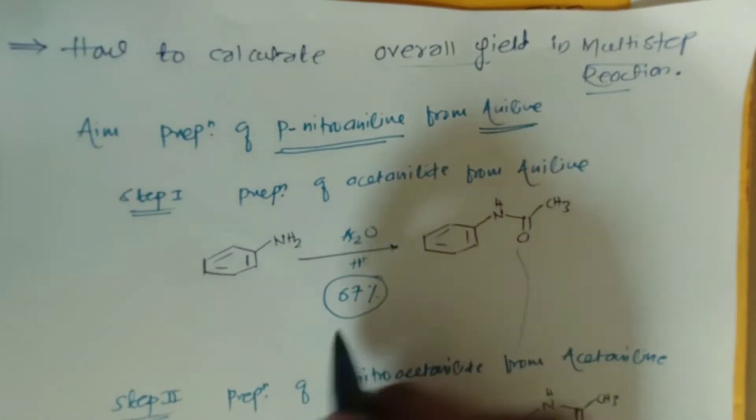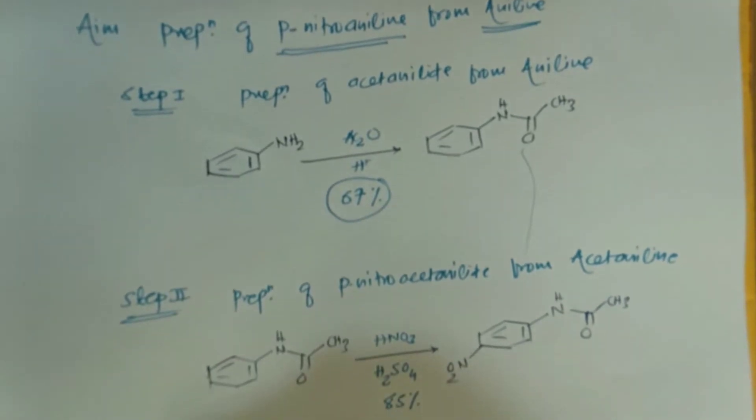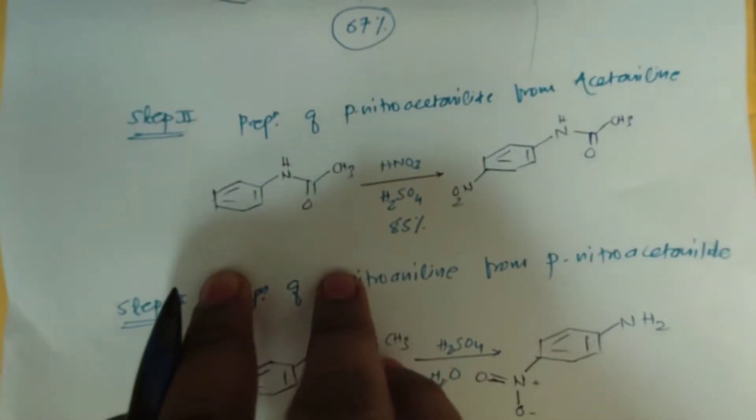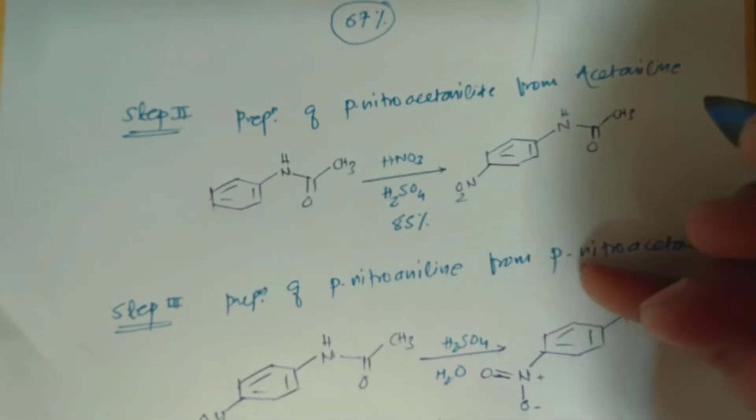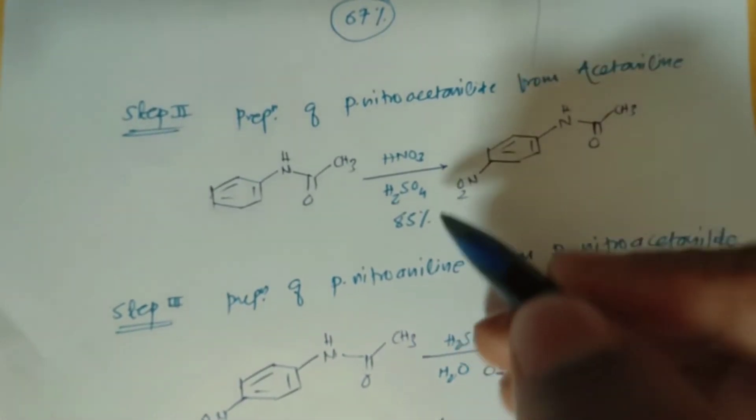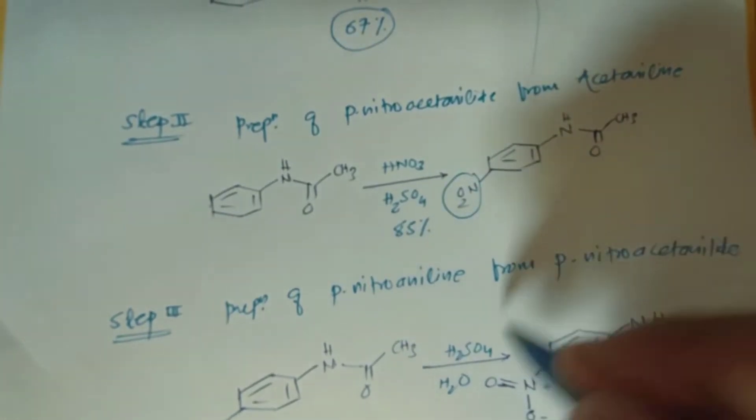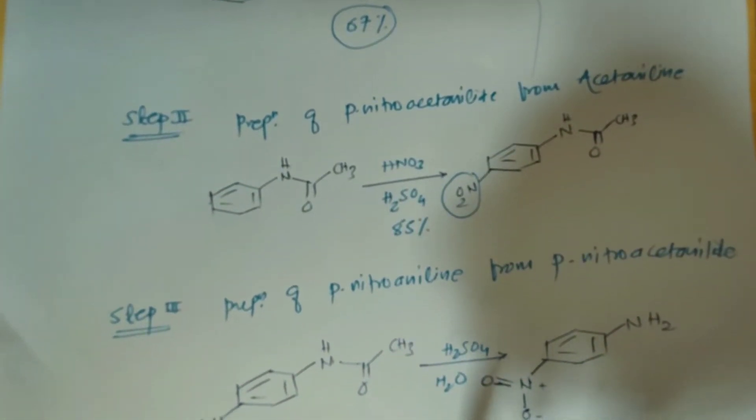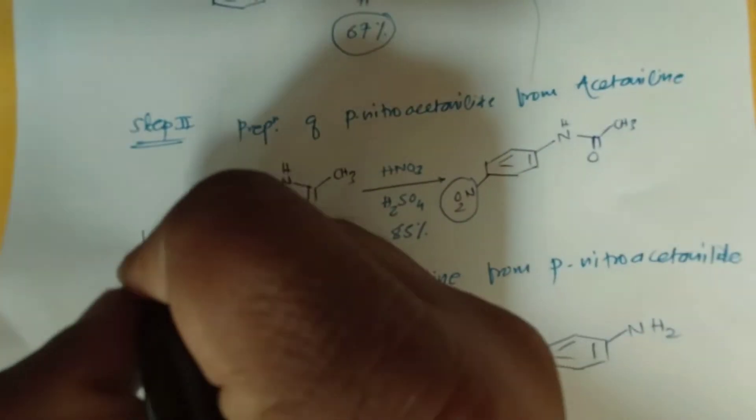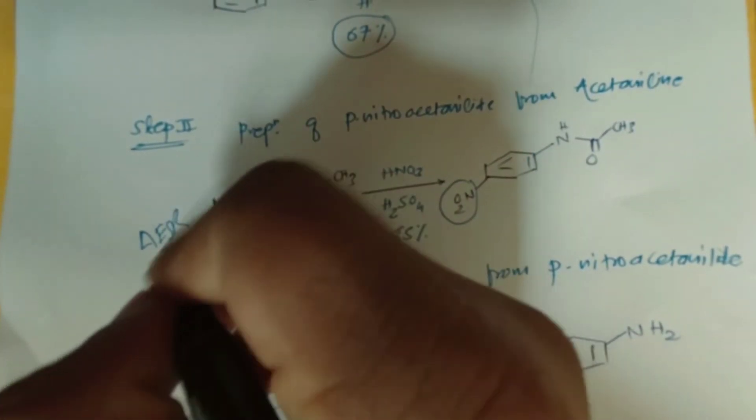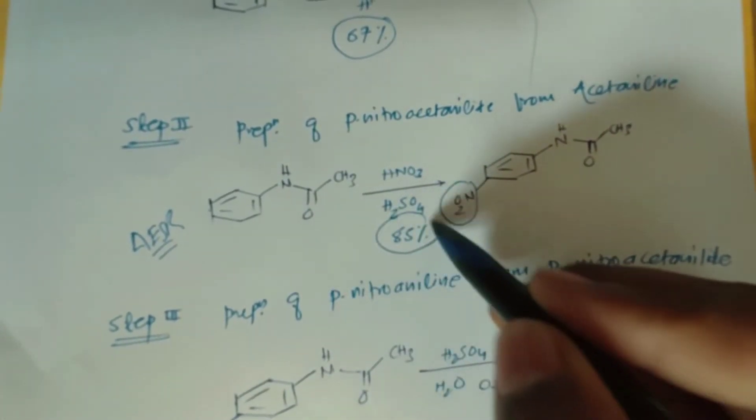In the second step, that is the preparation of para-nitro acetanilide from acetanilide. This is a nitration method where the nitro group is substituted at the para position. It is an example of aromatic electrophilic substitution reaction, and the yield of this second step is 85%.